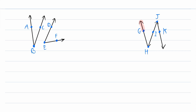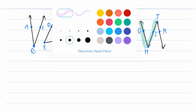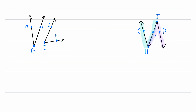Now what about over here? Is angle GHJ adjacent to angle KJI? Depending on how you define the side of an angle, it appears that they might have a common side, but they do not have a common vertex. Angle GHI has a vertex of H, and angle KJI has a vertex of J. So these two angles, even though they might have a common side, they're not adjacent because they don't share a vertex.